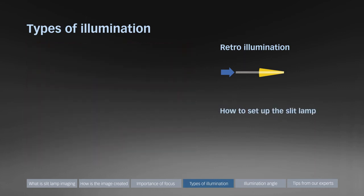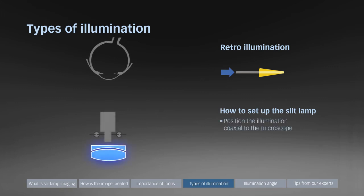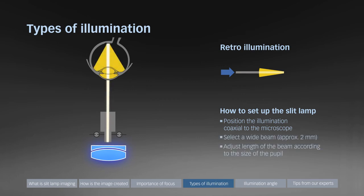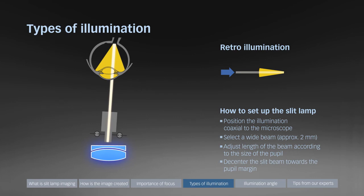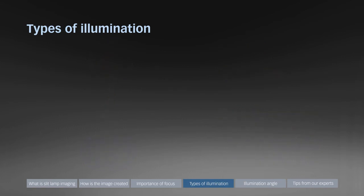To set up the slit lamp for retro illumination, position the illumination tower coaxial to the microscope, select a moderate beam width of between 1 and 2 mm, adjust the length of the beam according to the size of the pupil. De-centering the slit beam towards the pupil margin optimizes the illumination and removes unwanted reflections from the center of the image.